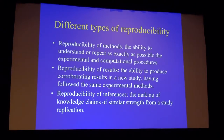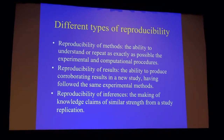Reproducibility of methods means that if you have some software, some script, some data, and you run these data on that script and that software, you get the same result. As we know, this doesn't happen necessarily, and very often we waste a day, a week, a month trying to find what bug is ruining our life. Reproducibility of results means that we run yet another study and get the same result. Reproducibility of inferences means that we see the same data and 500 people in the room get 500 different conclusions.